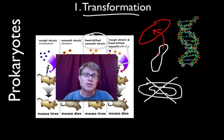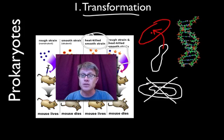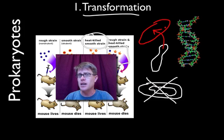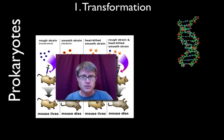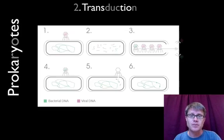We actually use transformation ourselves — we transform bacteria in genetic engineering to have them make a protein for us. That's how we started making insulin. But it is also a natural strategy bacteria use to pass traits from one to another.